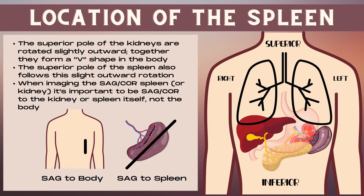Let's talk about the location of the spleen in the body. The superior pole of both the kidneys and the spleen are rotated slightly outwards. For the kidneys, this means they form a V-shape in the body, and the spleen follows the lie of the left kidney.